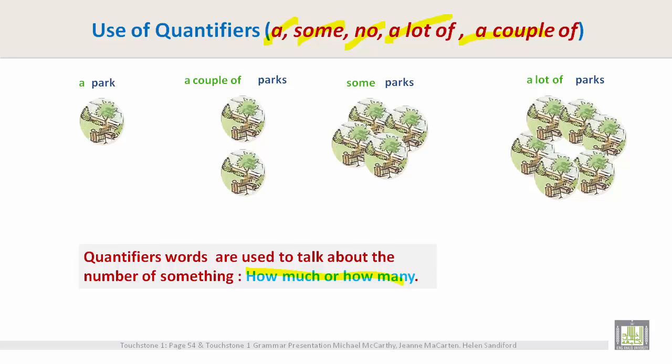So you see, a is one, a couple is typically two, some could be three or four or more, and a lot is five, six or seven.